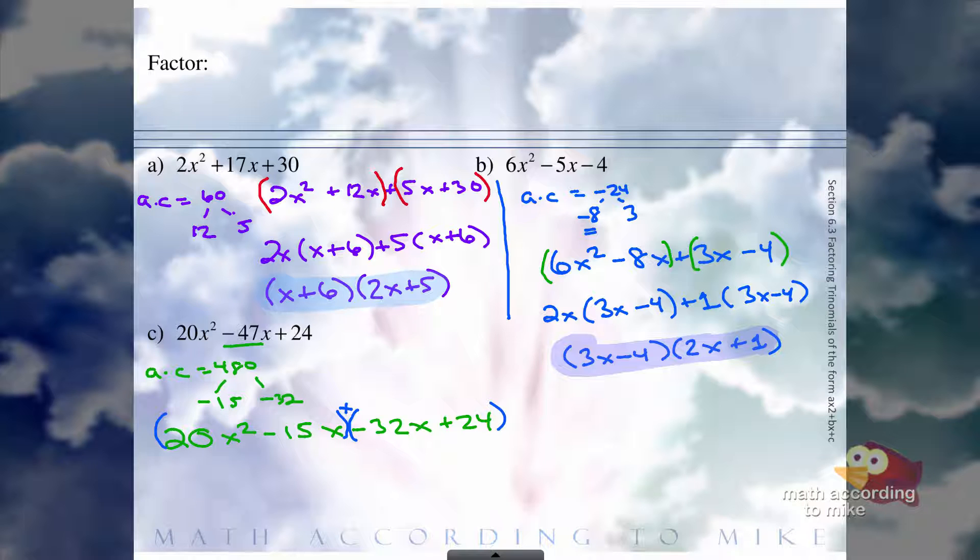From the first group we can pull out a 5x, and you are left with 4x minus 3. From the second group, we need to make sure we pull something out so that we're left with 4x minus 3. So we need to pull out a negative 8, not just an 8, a negative 8, and we'll be left with 4x minus 3.